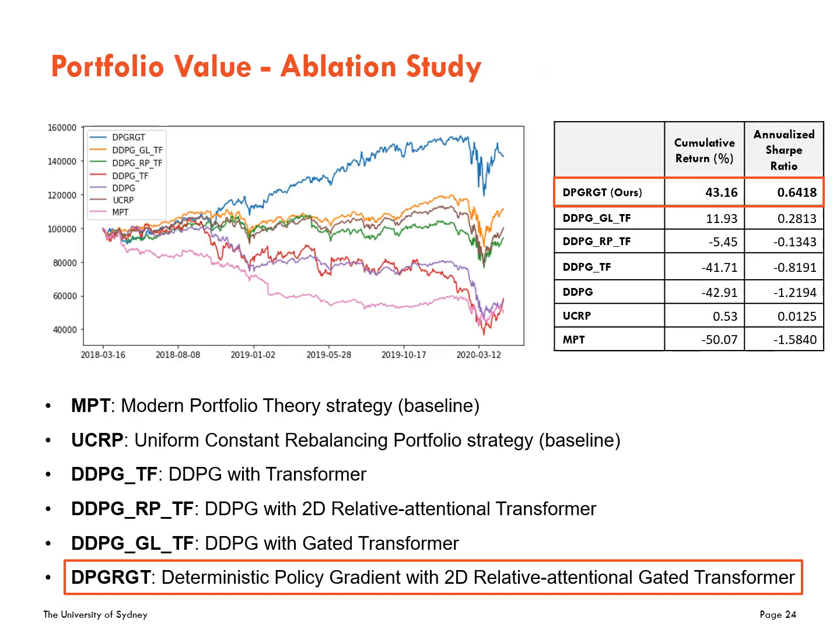The results are shown in the graph and table. The steep drop around March 2020 comes from the outbreak of COVID-19, which had a huge negative impact on portfolio values. Despite this drop, our model DPG-RGT outperformed all other models in terms of cumulative return and annualized Sharpe ratio. Using a transformer alone does not make a significant difference from vanilla DDPG, but a gated transformer or a transformer with 2D relative attention produced better results. Putting all components together brought the best result.